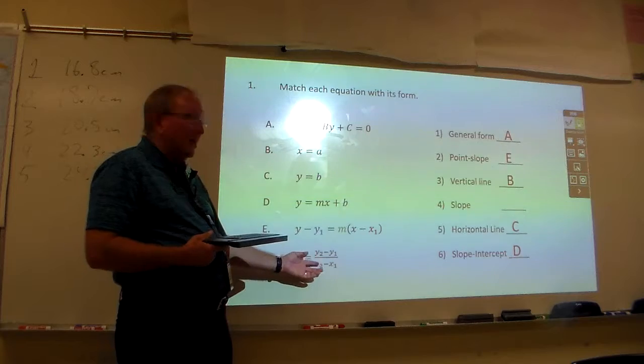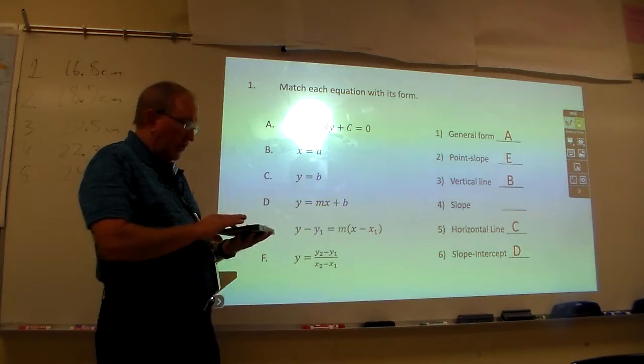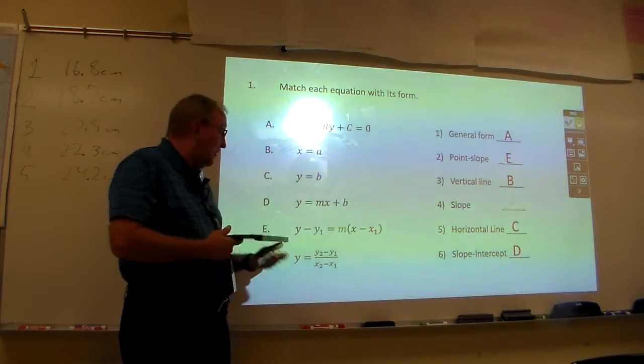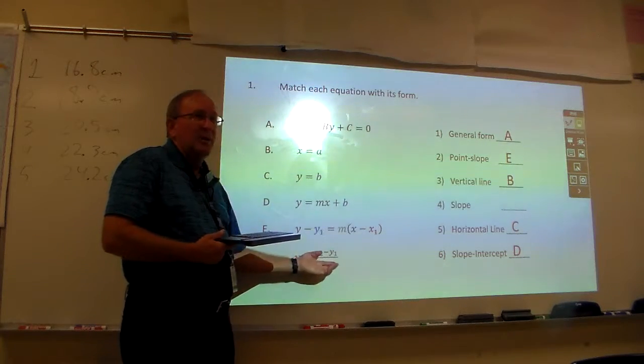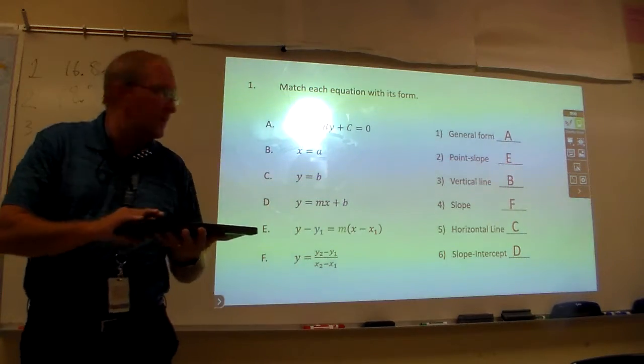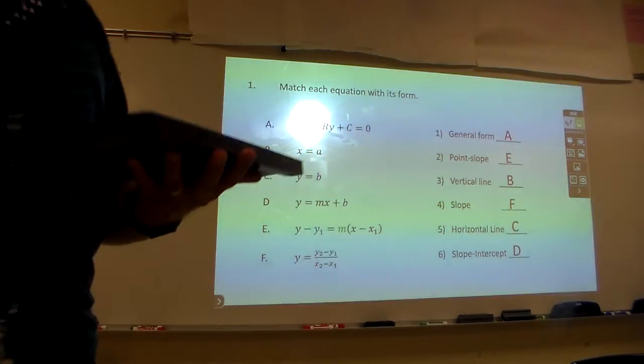And then, obviously, what's left? The slope. And remember, we talked about how to define slope if you have two points. The Y's were on top, right? Remember? Y2 minus Y1, X2 minus X1. So, there we go, all right?